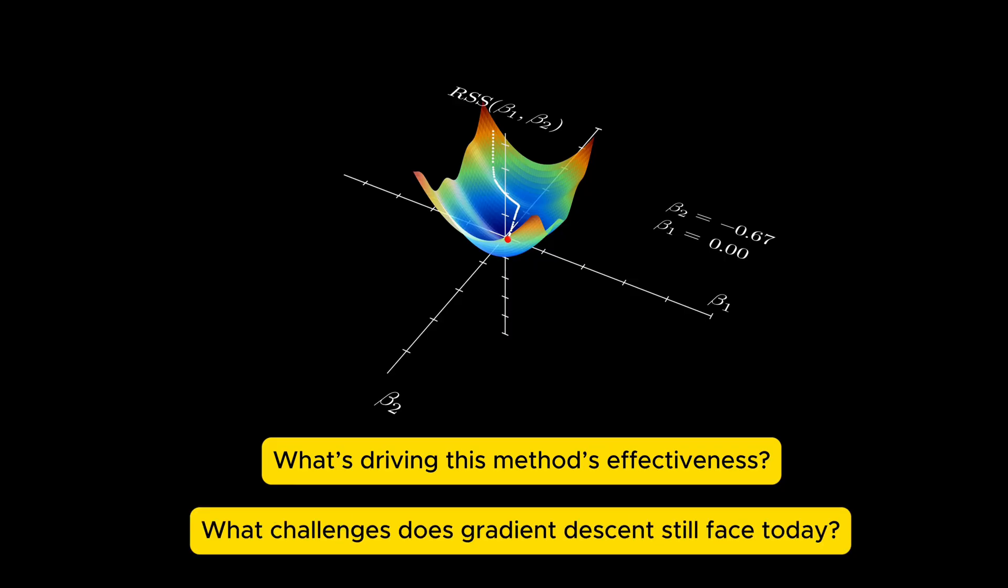What's the intuition behind this method, and why does it still work so well? And what problems does gradient descent still face, problems that we haven't fully solved even today? Let's explore.